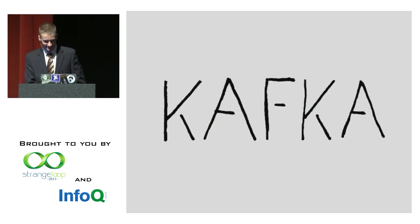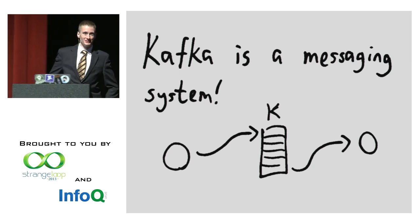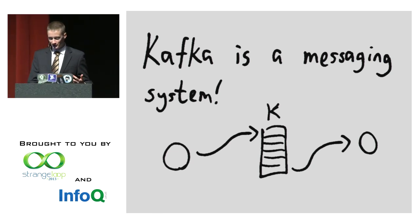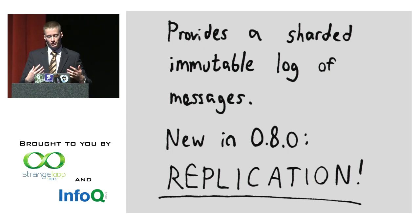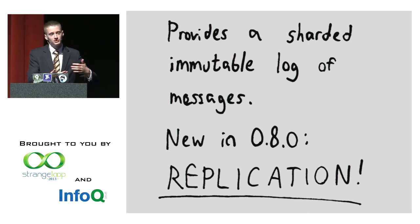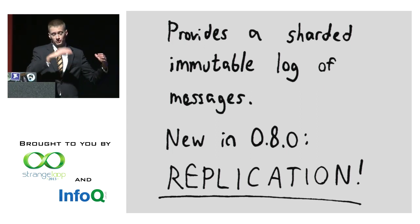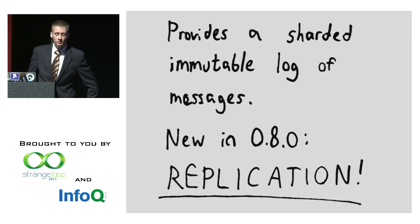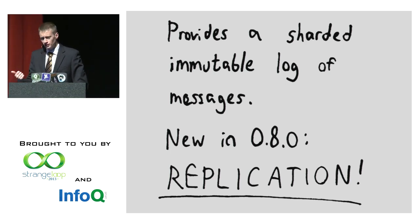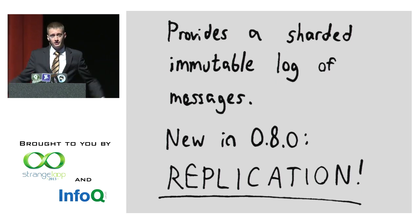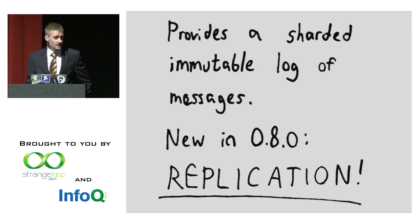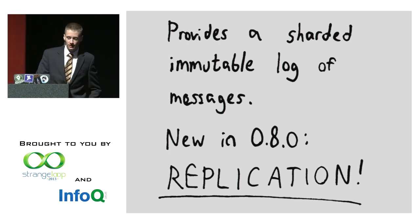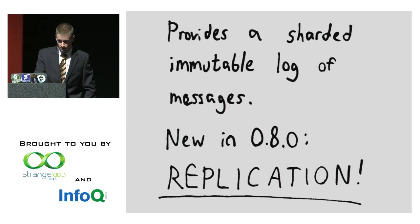Kafka is one of my favorite systems — it's a messaging system doing durable queues which are immutable logs of messages, with consumption managed using ZooKeeper. You get ordering, durability, linear shardability, and it's extremely fast — you can typically saturate a wire with Kafka messages. It has this new feature in 0.8 called replication.